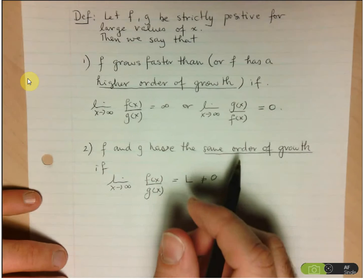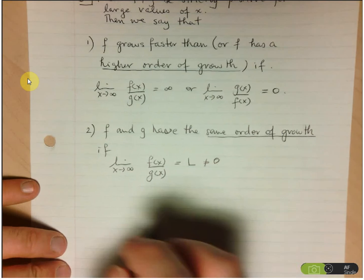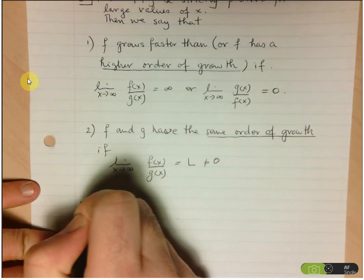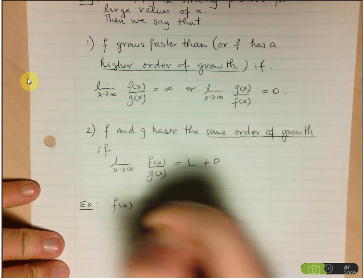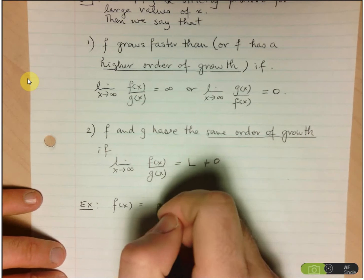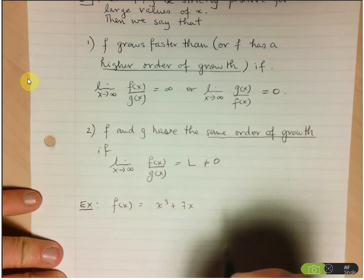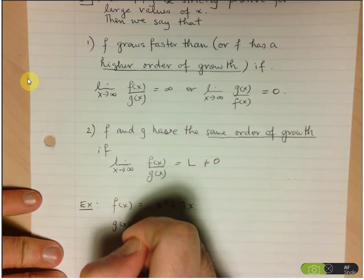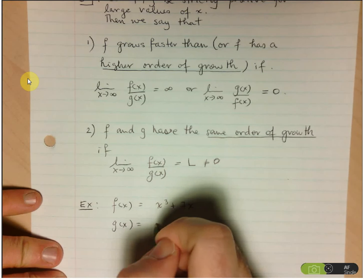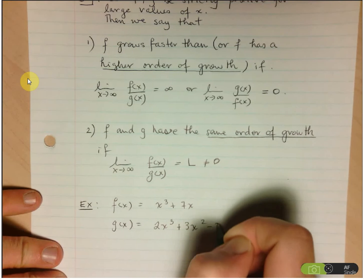So, let's take a look at an example here. Let's say we look at f at x equals x cubed plus 7x, and g at x equals 2x cubed plus 3x squared minus 2x.